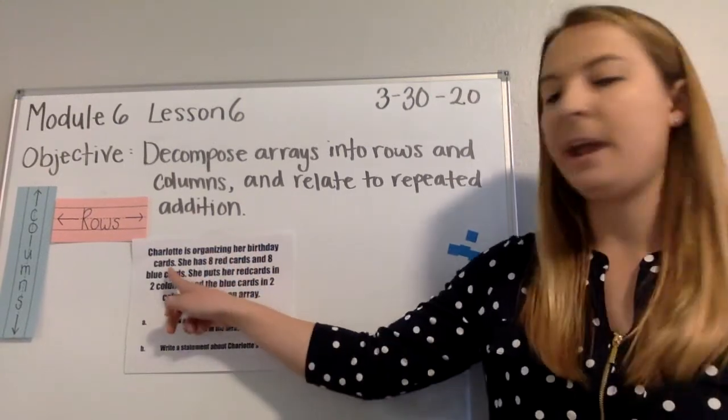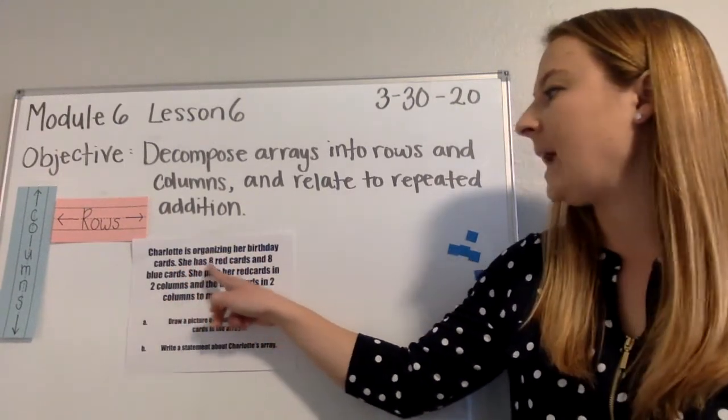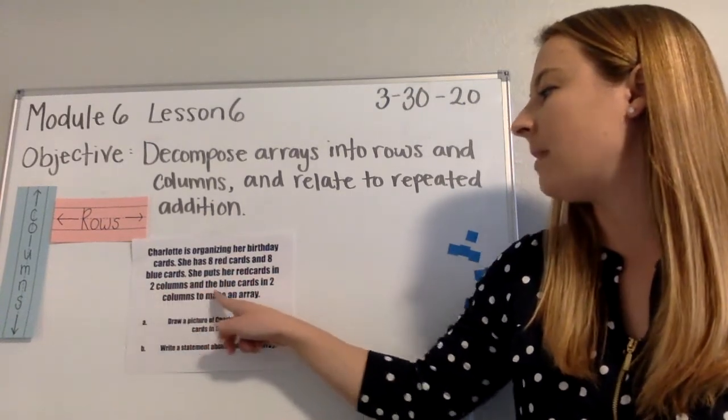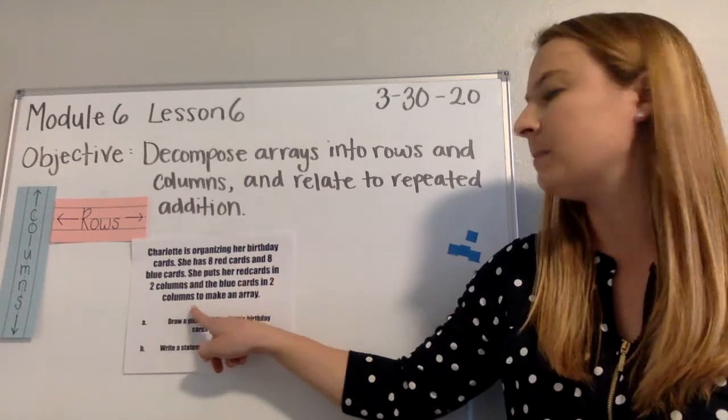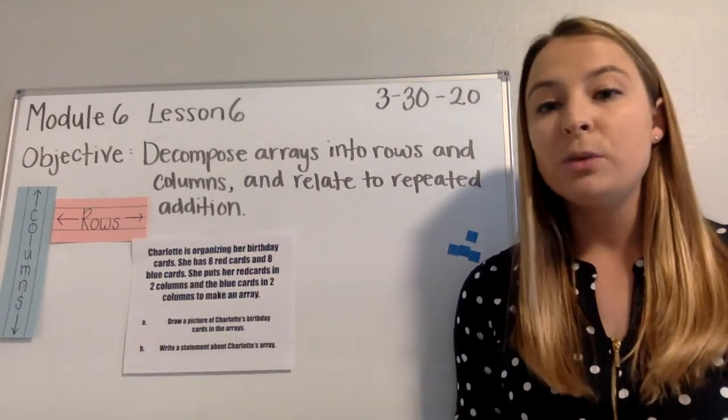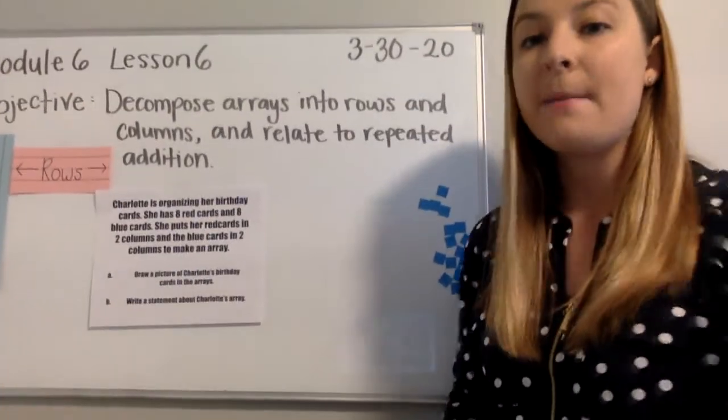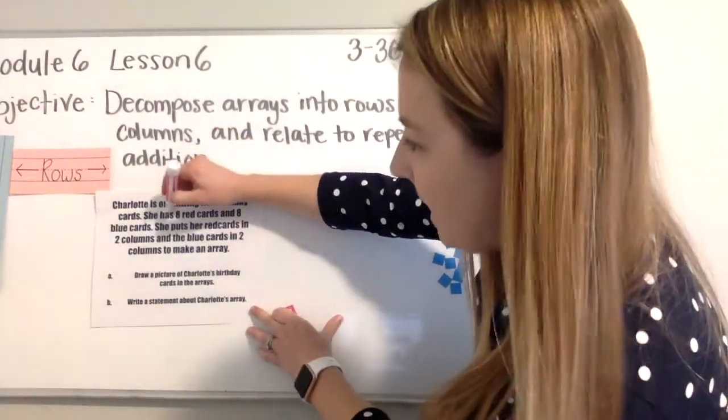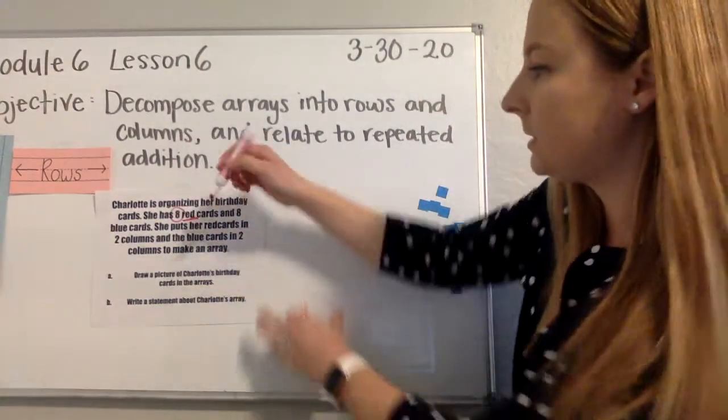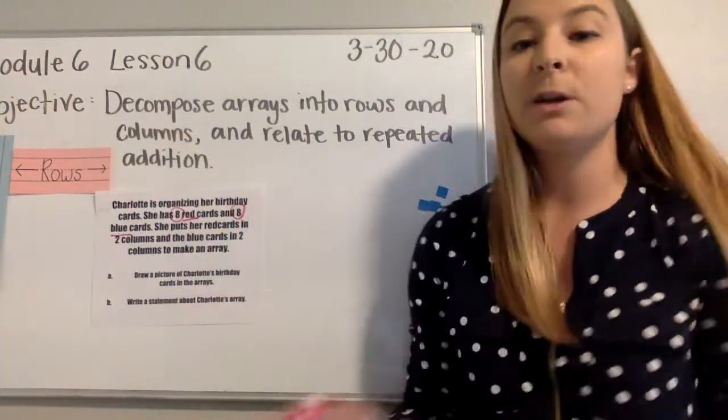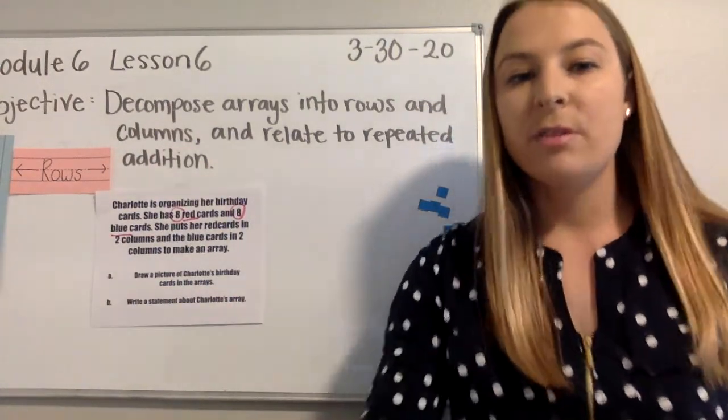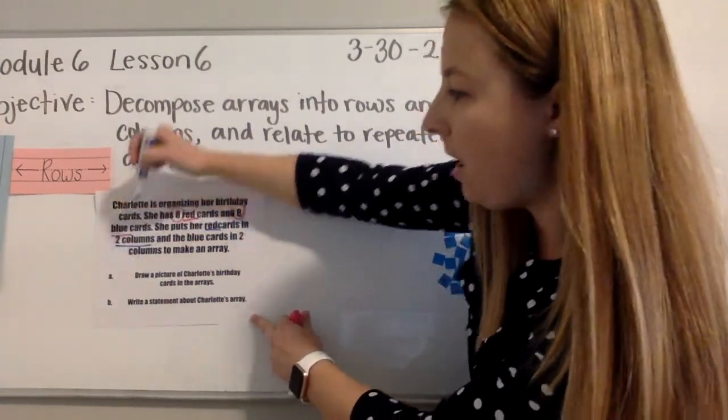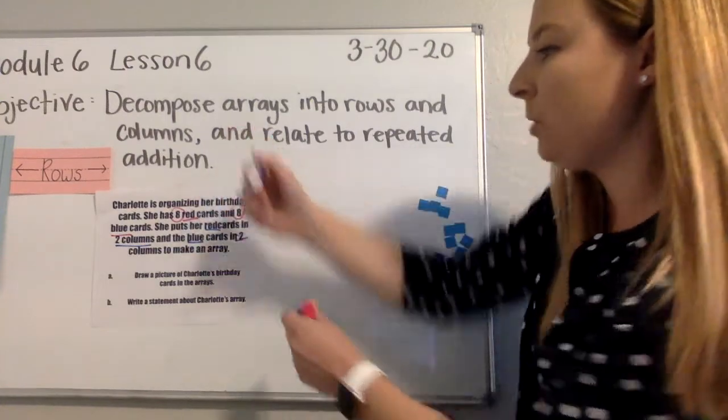Charlotte is organizing her birthday cards. She has eight red cards and eight blue cards. She puts her red cards in two columns and the blue cards in two columns to make an array. The first thing I'm going to do is stop and find important information that I might need to help me solve this word problem. One thing that stands out to me is that she has eight red cards and eight blue cards. I know some are red and some are blue. Another thing that stands out to me is that she puts the red cards in two columns and the blue cards in two columns.